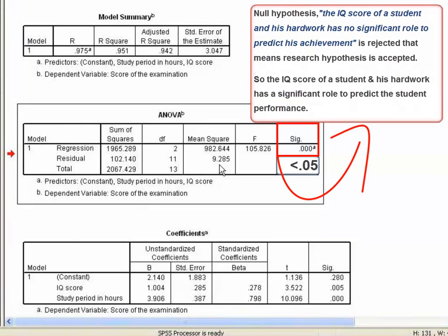This implies the null hypothesis, which is that the IQ score of a student and his hard work has no significant role to predict his achievement, is rejected. That means research hypothesis is accepted. So, the IQ score of a student and his hard work has a significant role to predict the student performance.